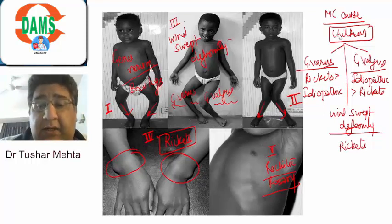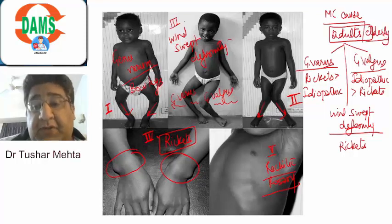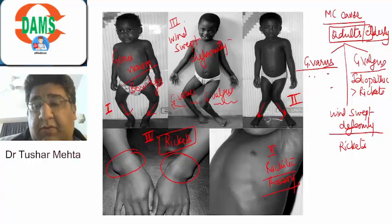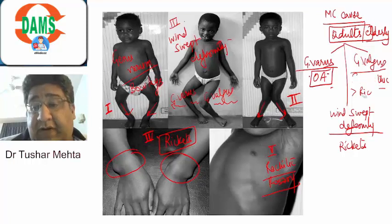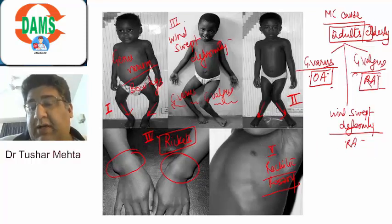One day, they will alter it. Rather than children, they will mention adults or elderly. For Genu varum in adults or elderly, the most common cause is osteoarthritis. For Genu valgus in adults or elderly, the most common cause is rheumatoid arthritis. For wind-swept deformity in adults, again, it is rheumatoid arthritis.